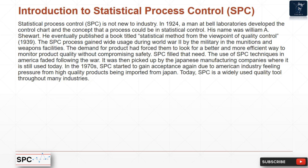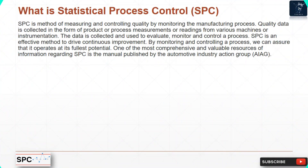The SPC process gained wide usage during World War 2 by the military in munitions and weapons facilities. The demand for product forced them to look for better and more efficient ways to monitor product quality without compromising safety — SPC filled that need. Use of SPC in America faded following the war, then was picked up by Japanese manufacturing companies. In the 1970s, SPC gained acceptance again as American industry felt pressure from high-quality Japanese imports. Today, SPC is a widely used quality tool throughout many industries.